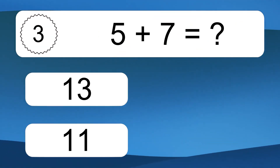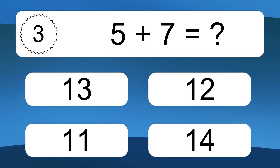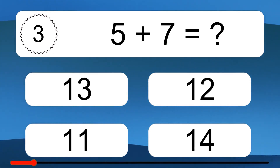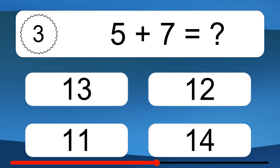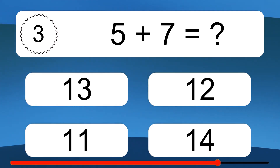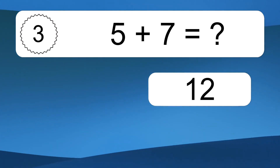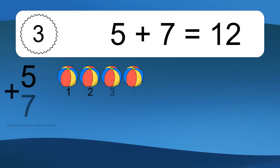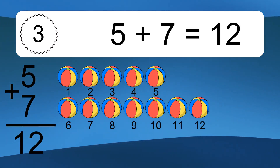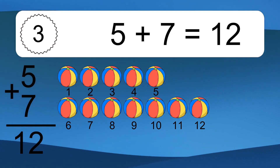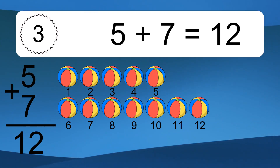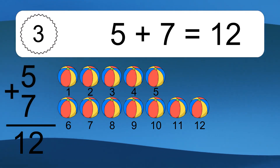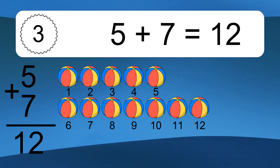5 plus 7 equals what? 5 plus 7 equals 12. Let's count it: 1, 2, 3, 4, 5, 6, 7, 8, 9, 10, 11, 12.